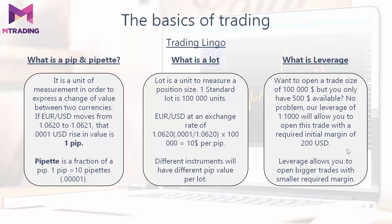Moving on to lot. A lot is a unit used to measure a position size. One standard lot is 100,000 units. For example, EURUSD at an exchange rate of 1.0620 times 1 pip divided by the value times 100,000 means that one lot value for one pip is $10. Different instruments will have different pip values per lot, which you can test on your demo account.